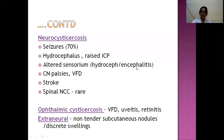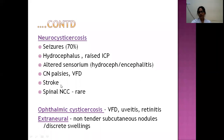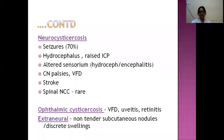Other features include altered sensorium — due to hydrocephalus or cysticercal encephalitis when parasite load is very high. Patients may also have cranial nerve palsies, visual field defects, and stroke. Stroke can be caused by vasculitis from the immune response or by compression of cerebral blood vessels by cysticerci. Rarely, cysticerci in the posterior fossa can descend into the spinal column, causing spinal neurocysticercosis with paraparesis, quadriparesis, spasticity, bowel and bladder dysfunction, and sensory disturbances.